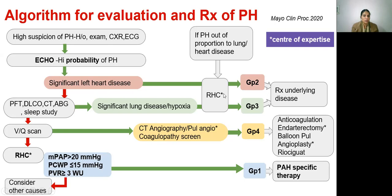If left heart disease is not present, look for significant lung disease or hypoxia by doing a combination of tests such as PFT, CT, ABG, and sleep studies, which could indicate group 3 pulmonary hypertension. Remember, in group 2 and group 3, PAH-specific therapy is generally not indicated — treat the underlying disease.